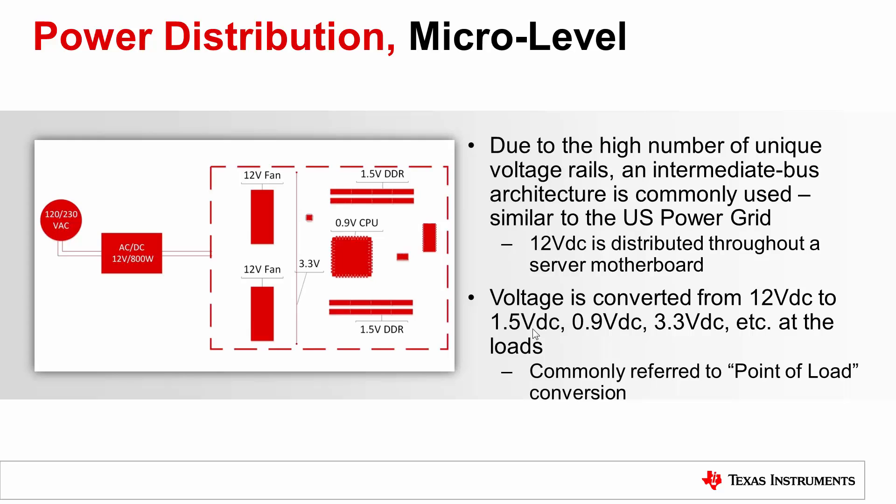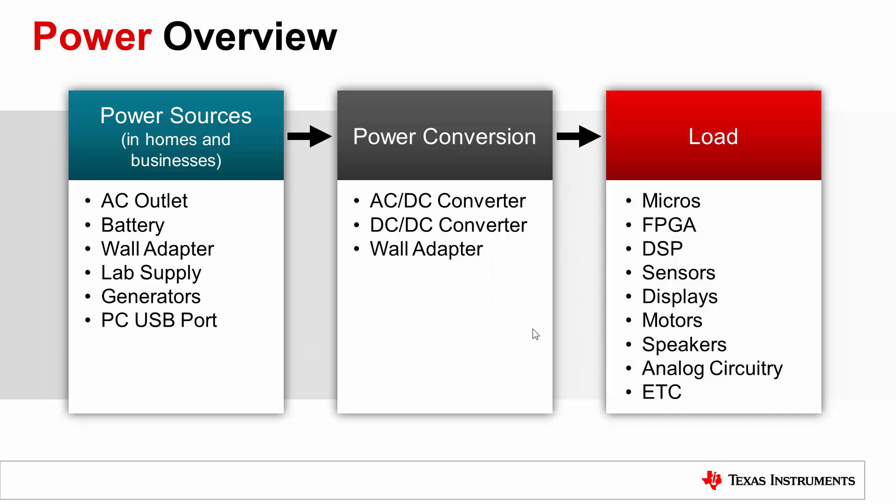To summarize, just like in the country's electrical grid, a server distributes a higher voltage 12 volt rail and converts voltages where needed. This architecture limits the I²R losses on the board. Power sources in schools, homes, and businesses can include AC outlets, batteries, wall adapters, lab supplies, generators, or PC USB ports, just to name a few. Power can then be converted in the form of an AC to DC conversion, a DC to DC conversion, or in a black box like a wall adapter. This converted power is then used to support the activity of all types of electrical loads.